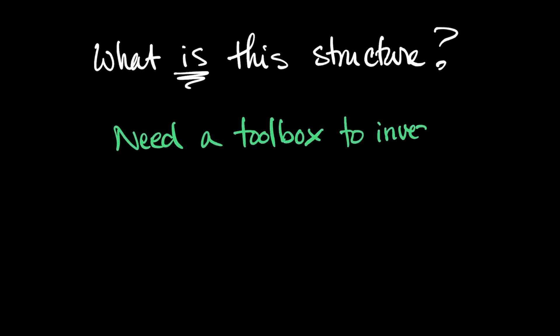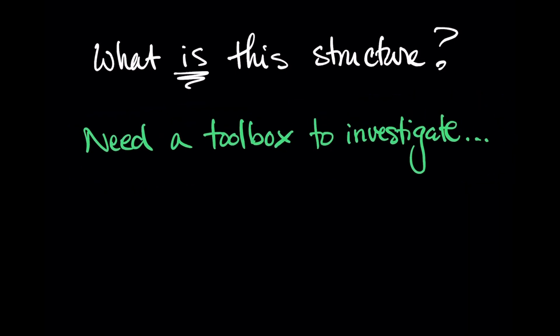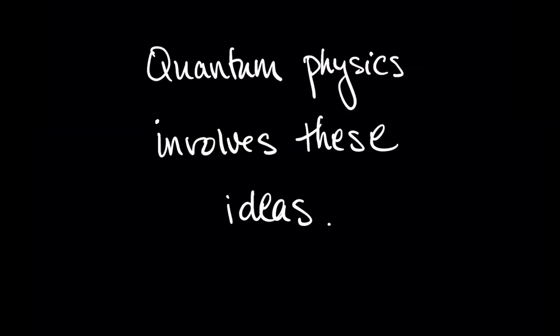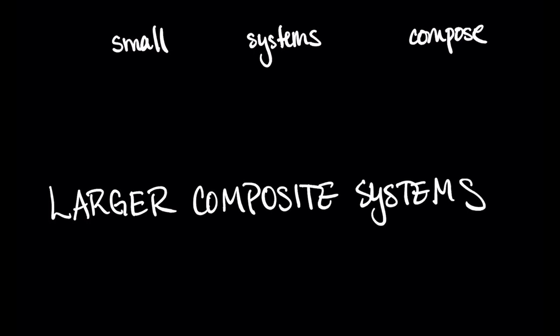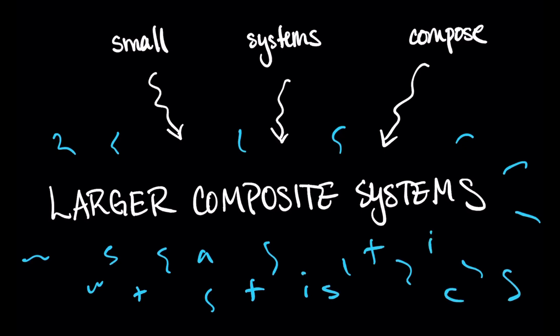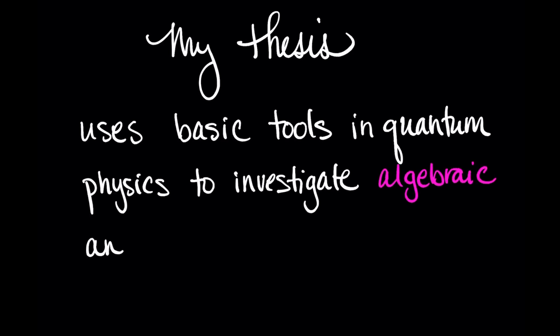Okay, but what is this mathematical structure? To try to understand it, we look for an initial set of mathematical tools to start exploring. Now to find this toolbox, it's good to look for another example where compositionality and statistics meet. And again, we do not have to look far. The world of quantum many body physics involves precisely these ideas. Small systems compose to form larger composite systems and various properties of these quantum systems are driven by statistics. And so that is where we pick up. My thesis uses basic tools in quantum physics to investigate algebraic and statistical mathematical structure.